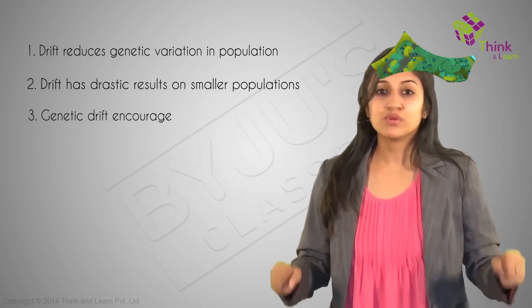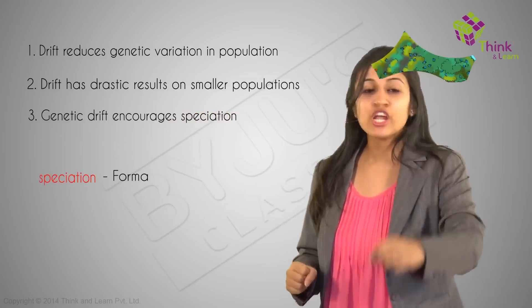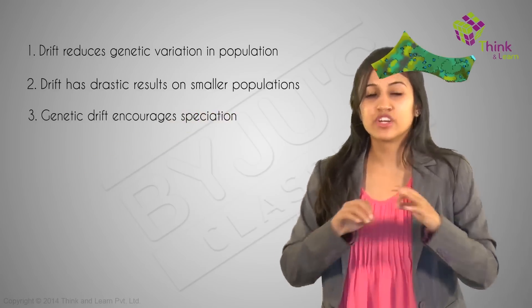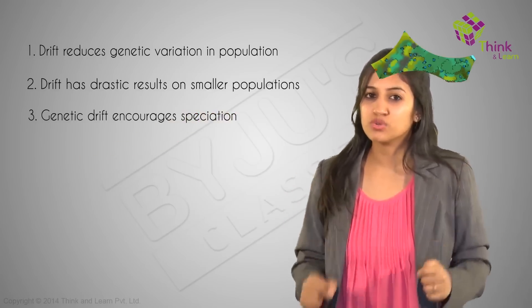Genetic drift may also contribute to speciation — the formation of a new species — if the small group manages to survive. Groups that arrive on islands far from the mainland are good examples: by virtue of their small size, they cannot carry the full range of alleles found in the parent population on the mainland. It's obvious that what started as a rare variation came to become a common characteristic in the population, as we saw in the cases of the moths and the beetles.